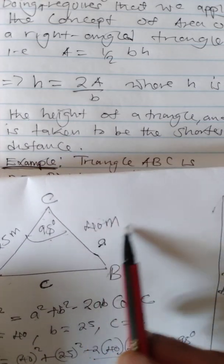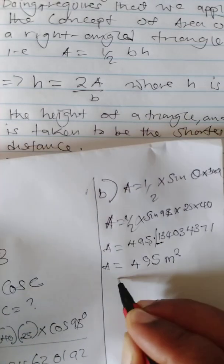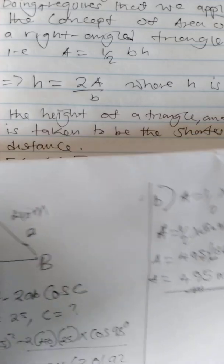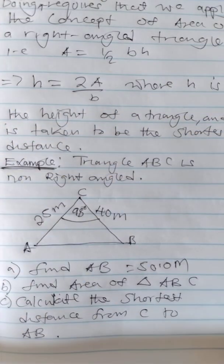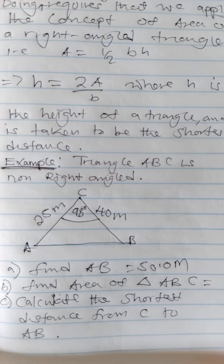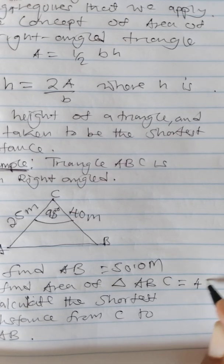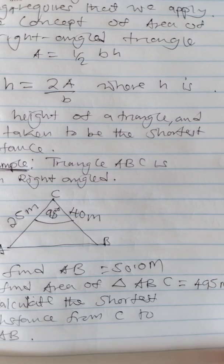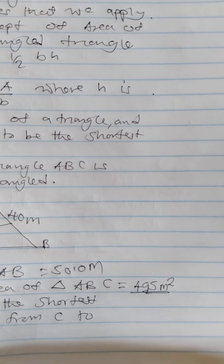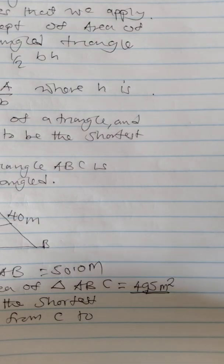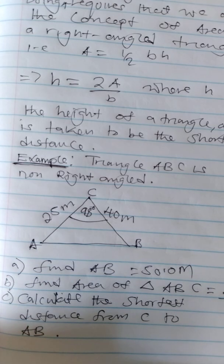The triangle had units of meters, so the area is in square meters. So the area of the triangle is 495 square meters.